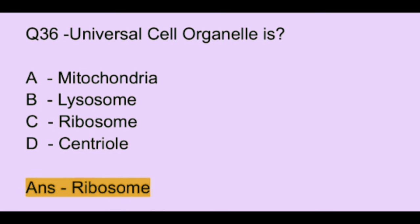Question number 36. Universal cell organelle is: Option A: mitochondria. Option B: lysosome. Option C: ribosome. Option D: centriole. The correct answer is option C, which is ribosome.